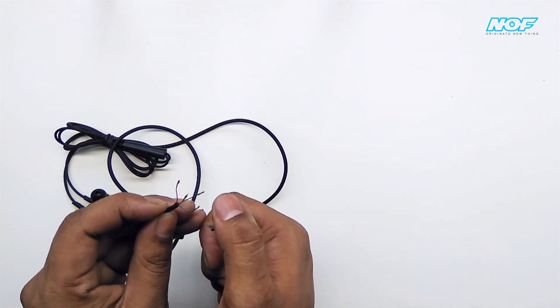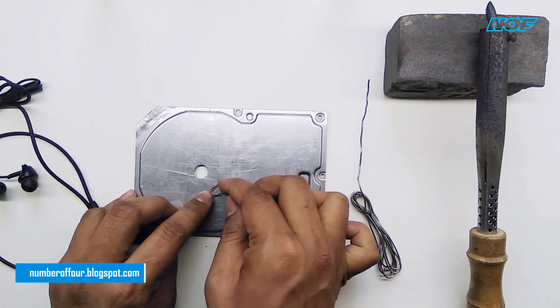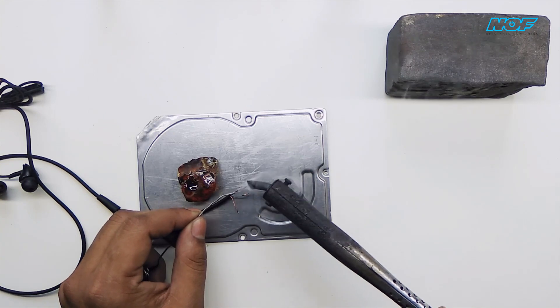Now I clean up the wire. Then I use soldering lead to make it easy to solder on the jack.